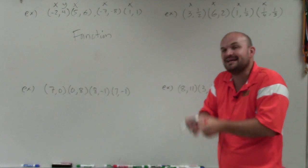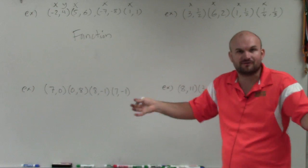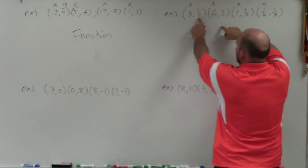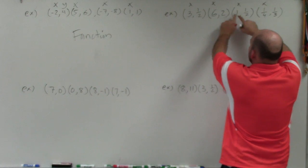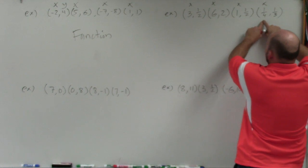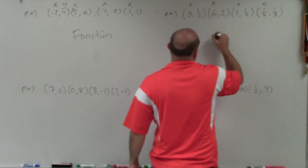You just can't have, again, the input going to two different outputs. So my x-values, that goes uniquely to 1 half. 6 goes uniquely to 2. 1 goes uniquely to 1 half. And 1 fourth goes uniquely to 1 third. So it all works.